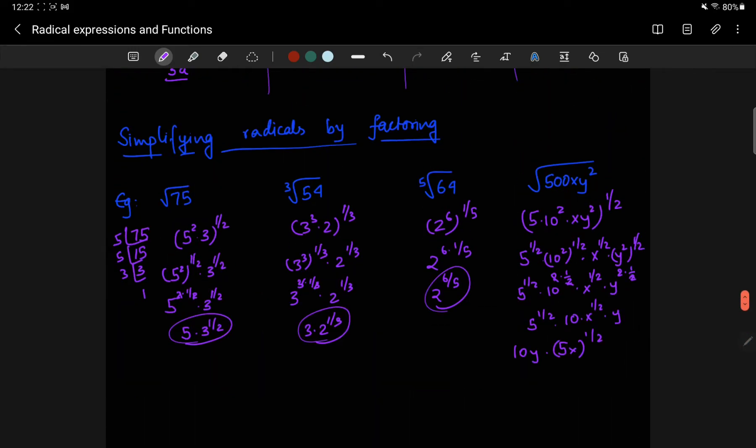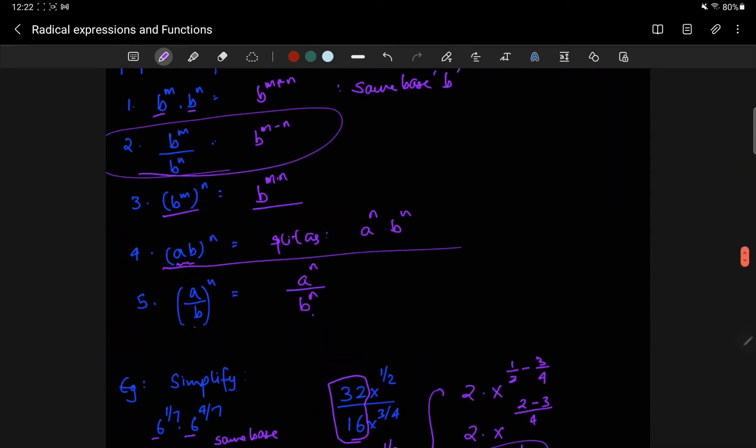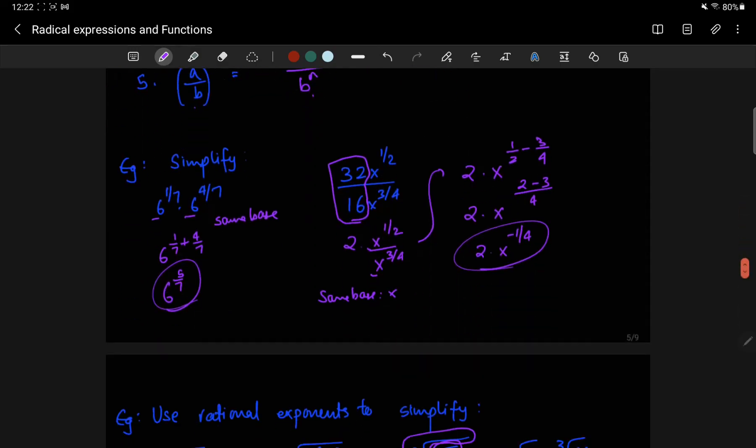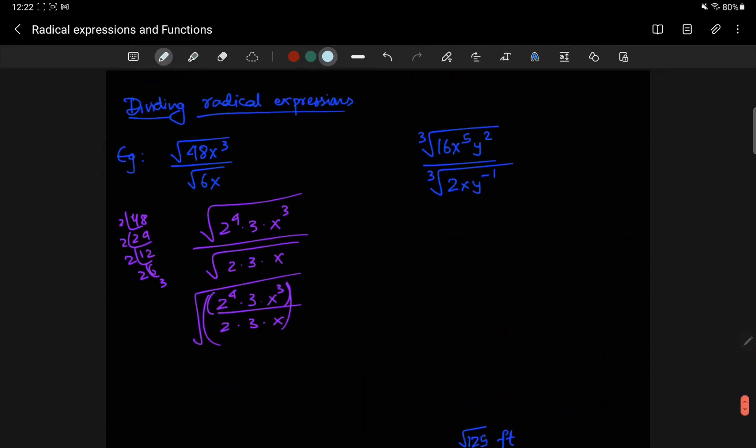Why is that? Well, that's because of this property here. If you apply this in reverse, if you have the same exponent, then you can combine the division. Now, once you combine the division, you'll notice there are things you can cancel off. The 3s cancel off. You're left with 3 copies of 2 and an x squared.